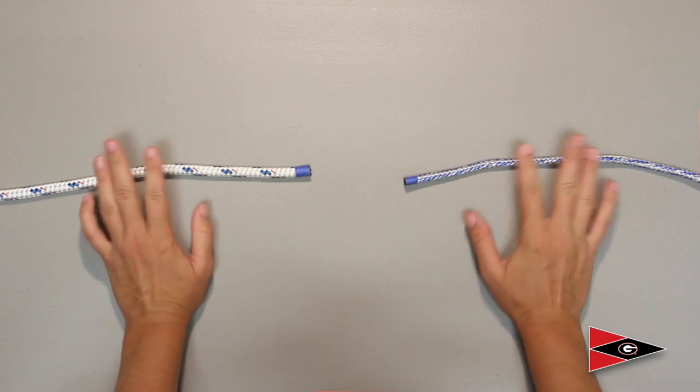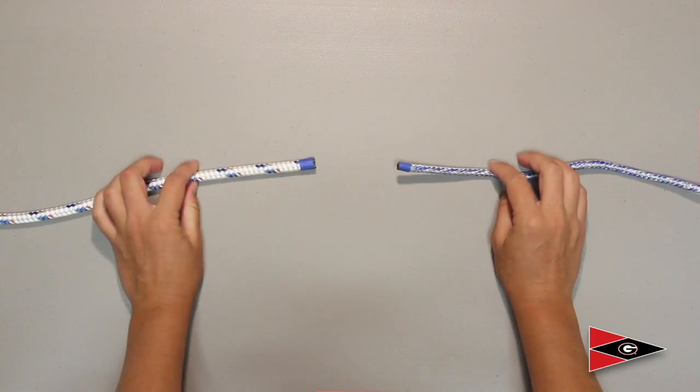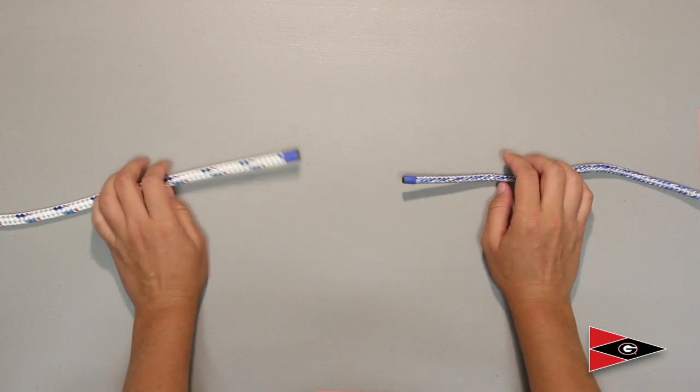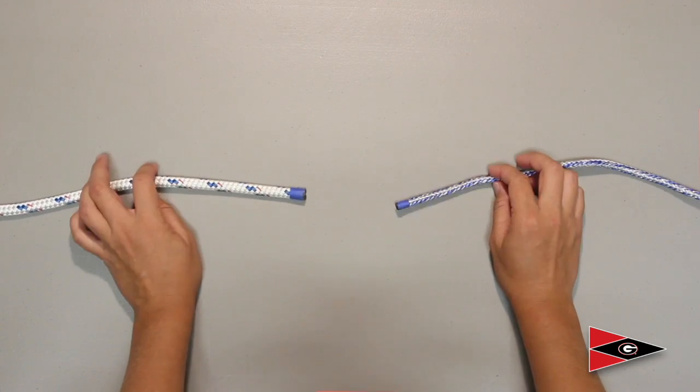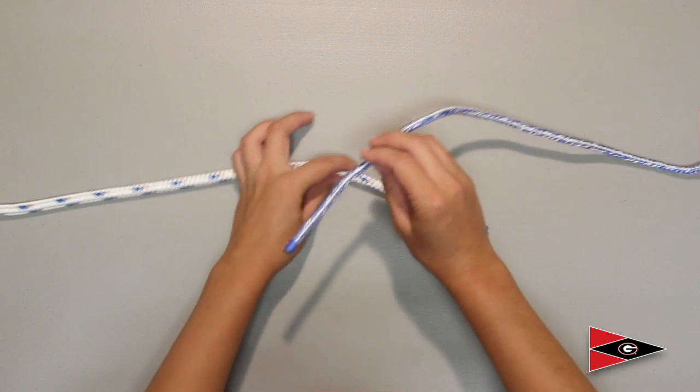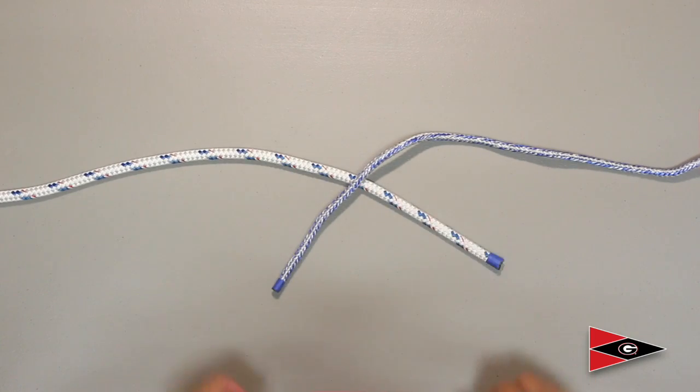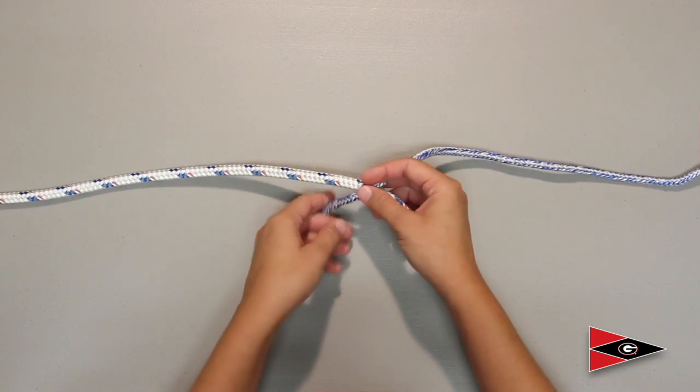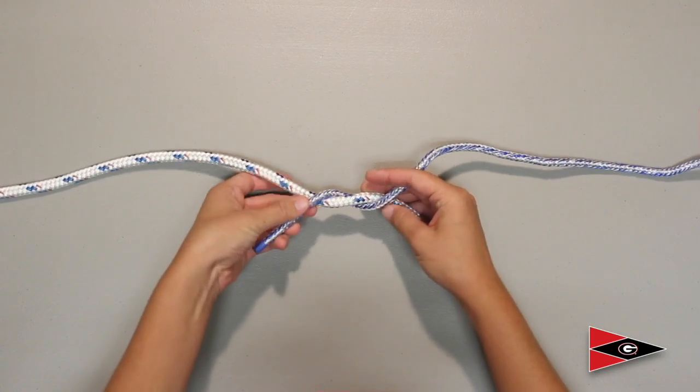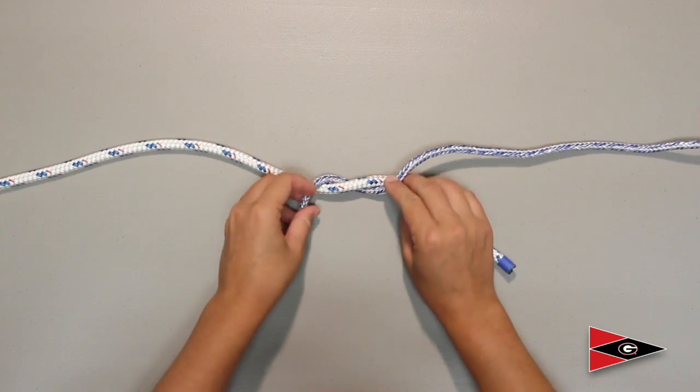For your square knot, you're going to be working with two ends of a line. And I've made these different colors so that you can see where each line goes a little better. The first step is to cross the right over the left. And then you're going to tie your shoes. So whether that's flipping it over or flipping the other one over, getting to this point is your goal.